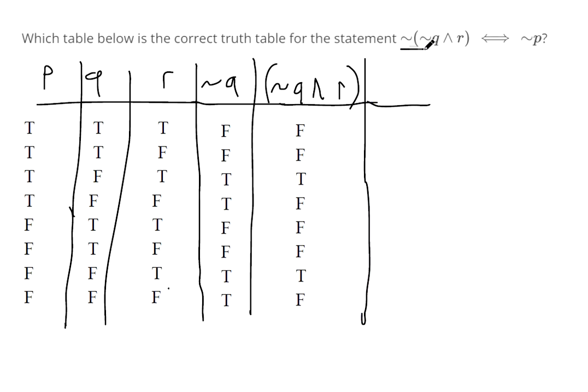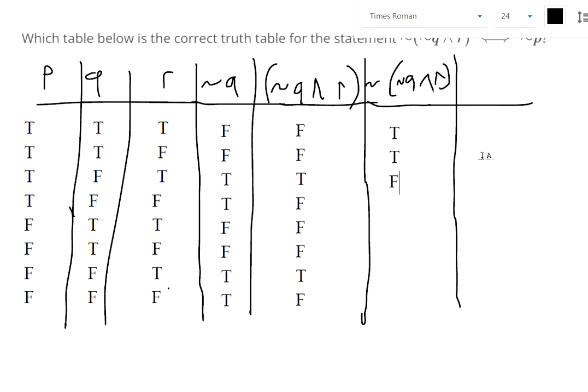And then we're taking the negation of that column that we just made. So the negation of Q and R is getting pretty messy. But we can do what they want us to do. So this just means we're taking everything in that column directly to the left and we're changing their values from true to false or false to true.